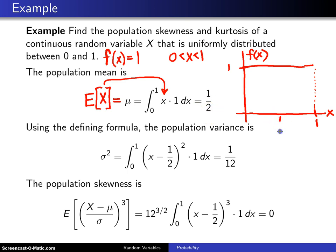You knew that already just by looking at the distribution. The balance point here, because it is symmetric, has to be at 1/2. So the center of gravity or the population mean is 1/2.